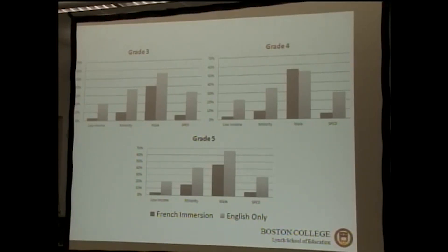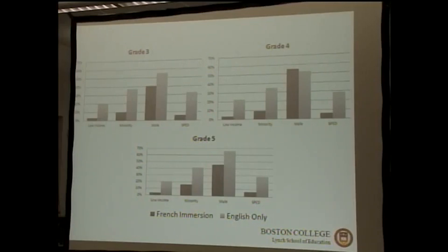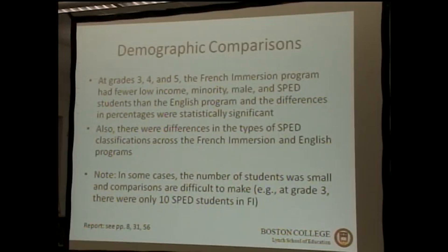For special education classifications, we're also seeing a difference. Some of that difference you would expect, because special education is a classification that can lead to disparities in the ability to learn through a different language — so it's somewhat different in character from gender, minority status, and low income status. In each of these demographic categories, we did find a statistically significant difference between the percentages.